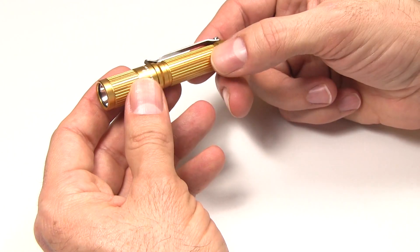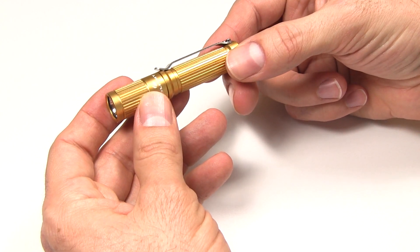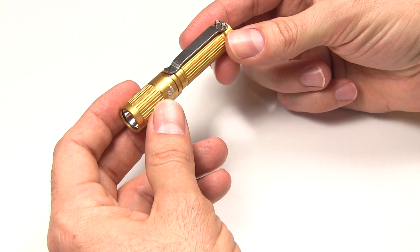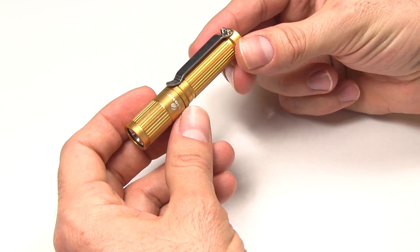But otherwise, that is about it, the Olight i3 EOS. It's a great little light. Check them out in all the fashion colors. Pretty reasonably priced, I think, in the $30 range. So there you go.